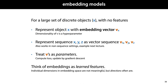Embedding vectors occur in many contexts, not just sequence learning, so we'll define them a little bit more broadly. In any setting where you have a large collection of discrete objects and no features for these objects, you can represent them with embedding vectors.